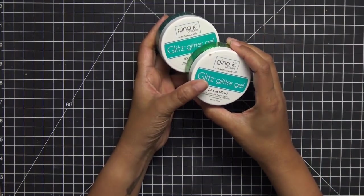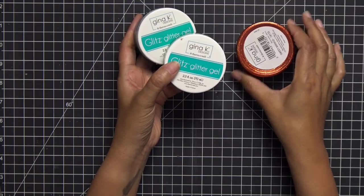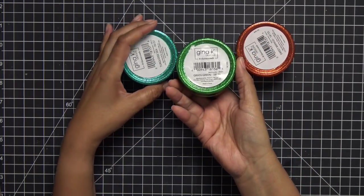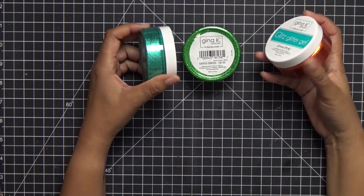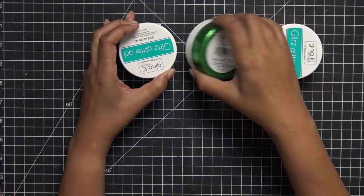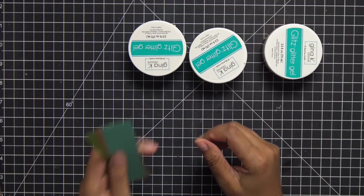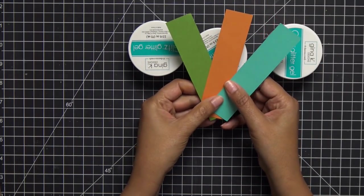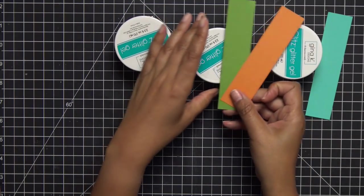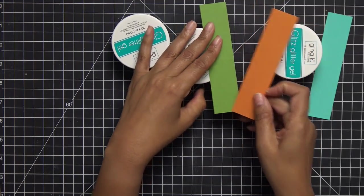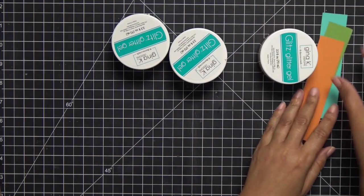I'm using the Glitz Glitter Gel in a couple of spring colors: Sweet Mango, Grass Green, and Turquoise Sea, and I absolutely love these colors. This gel is gorgeous, it's not like your regular embossing paste—it has beautiful texture to it. I'm also going to be using cardstock in the same exact color so I can do a tone on tone look. You can see how the Glitz Glitter Gel matches perfectly with the Gina K cardstock.